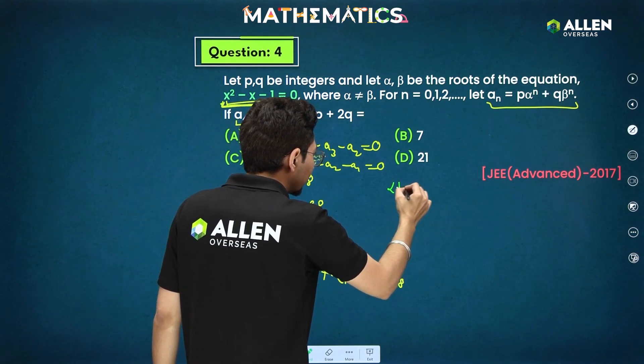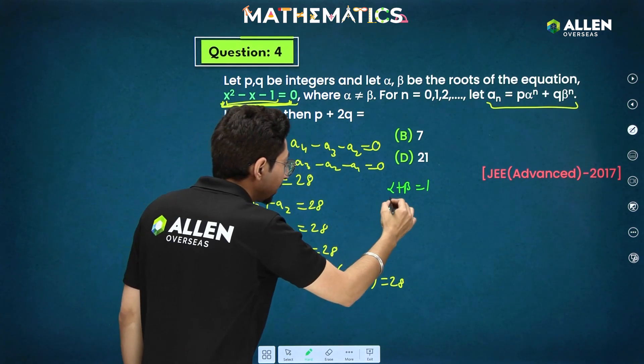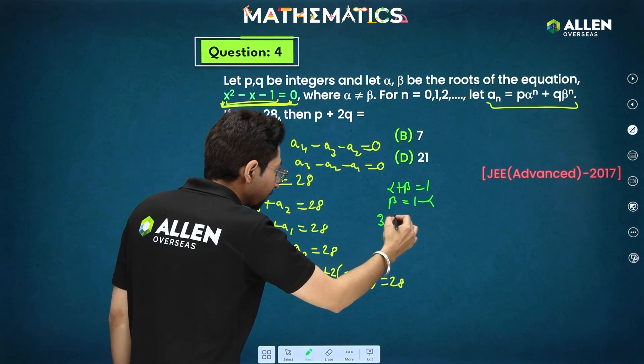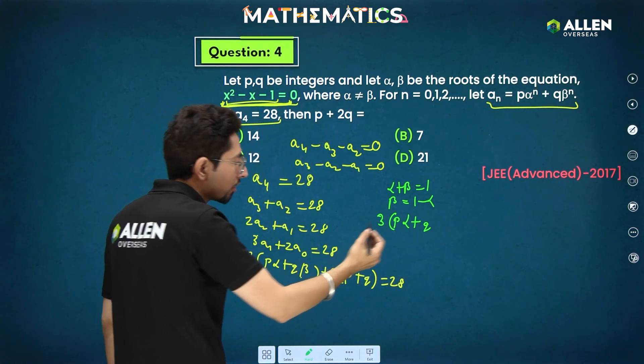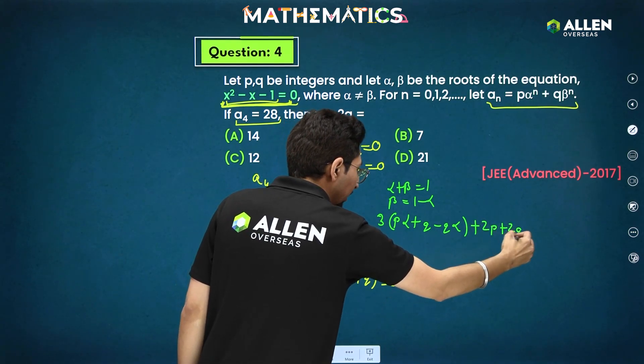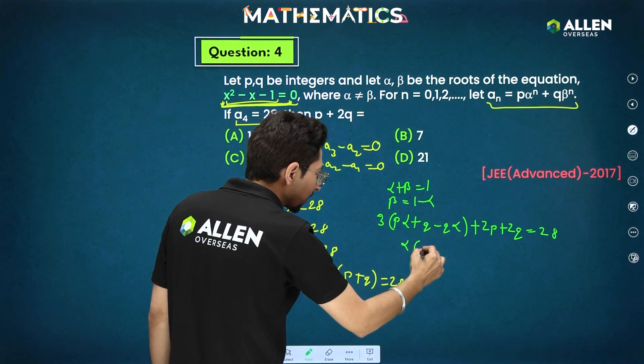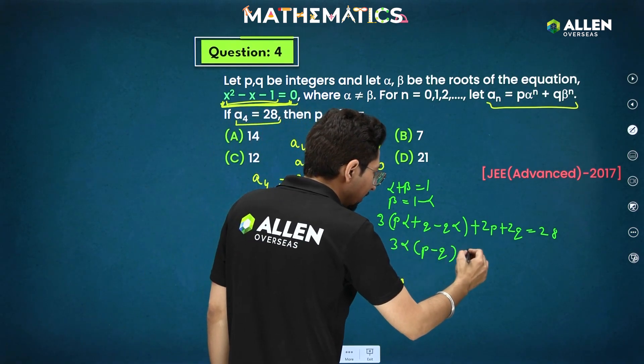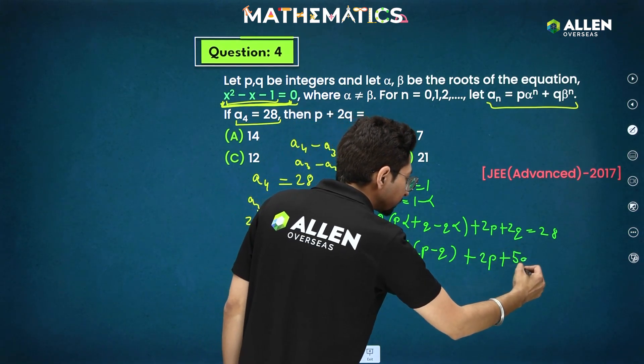Sum of roots will be alpha plus beta, that is 1 only. Sum of roots is 1. So beta can be written as 1 minus alpha. Beta is 1 minus alpha. So this part can be converted entirely in terms of alpha, which will be 3p alpha plus q into q into 1 minus alpha or you can write q minus q alpha plus 2p plus 2q that is 28. Now from this part coefficient of alpha will be coefficient of alpha p minus q into 3 plus what else we have? 2p plus 3q plus 2q that is 5q. This is 28.